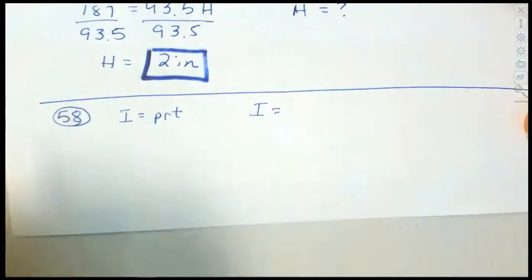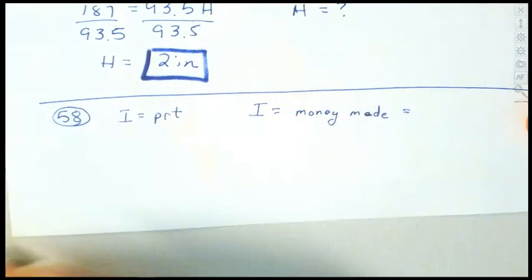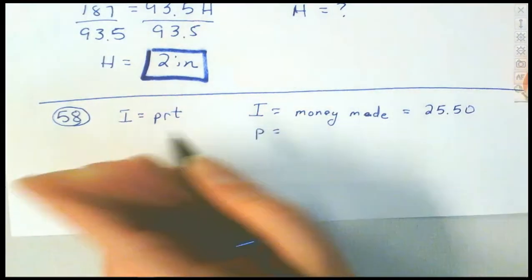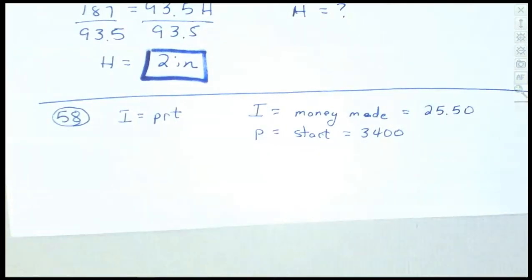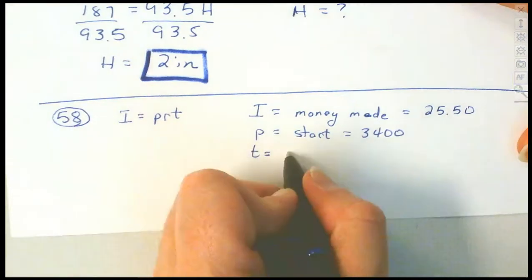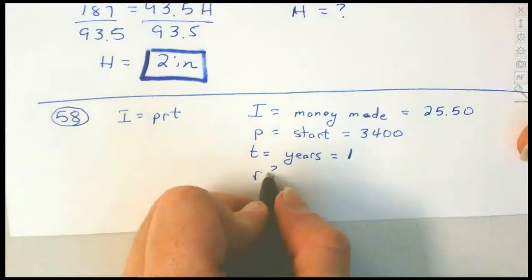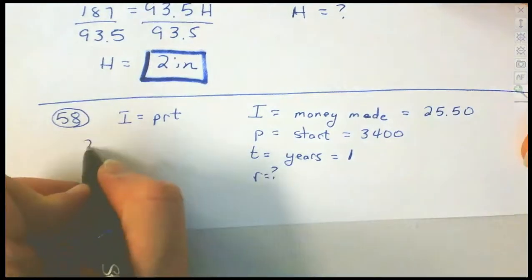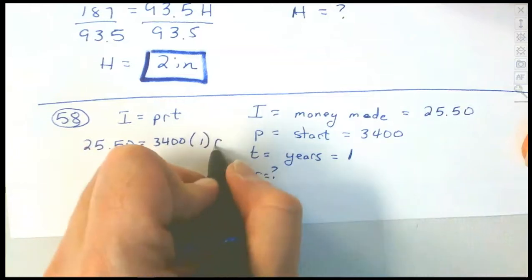I is the interest — how much money we made. We made $25.50. P is the principal — how much we start with, which is $3,400. T is the number of years, which is 1. We don't know the percentage rate — that's our unknown. So we plug values in: $25.50 = $3,400 × 1 × R.